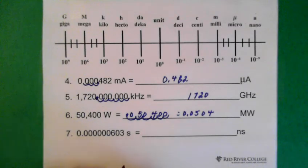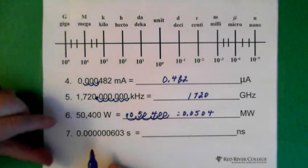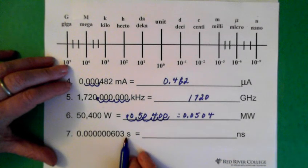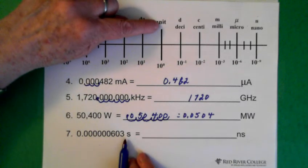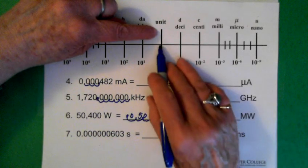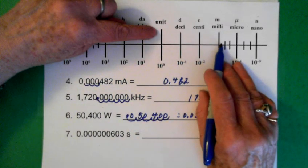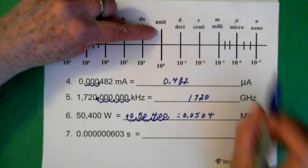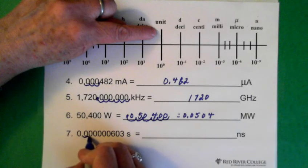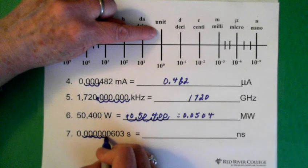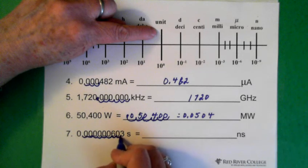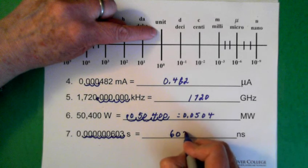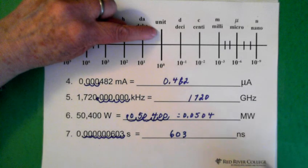Last one — seconds. We have this many seconds and we want to convert to nanoseconds. Seconds has no prefix so it's at our basic unit. Going to nano: one, two, three, four, five, six, seven, eight, nine places to the right. Moving the decimal nine places to the right, we end up with 603 nanoseconds.